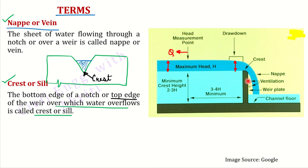Ab hai ki yahaan se jab pani behta hai, toh aapko kuch ventilation provide karni hoti hai. Ventilation ka kya matlab hai? Yahaan pe kuch air present honi chahiye. Toh hum ensure karte hain ki yeh jo nappe hai, nappe ke neeche hamesha kya present ho — air present ho. Weir aur nappe ke beech mein hamesha air present honi chahiye. Yeh jaise jaise hum chapter mein aage badhenge, hum is ventilation ke concept ko detail mein discuss karenge.